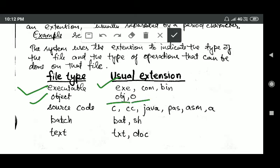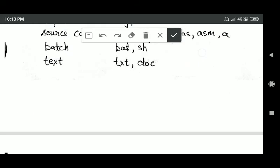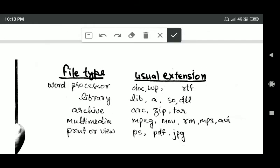For source code types of file, the usual extension is c, cc, java, ps, asm, or a. For batch types of file, the usual extension is bat or sh. And for files which are of type text, the usual extension is txt.